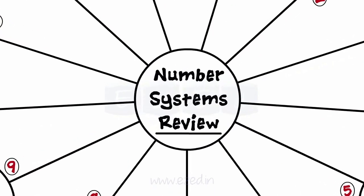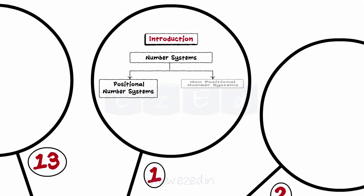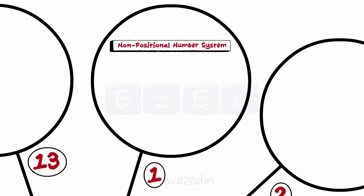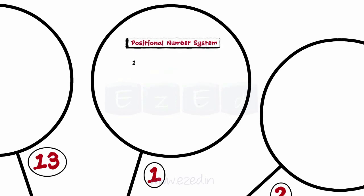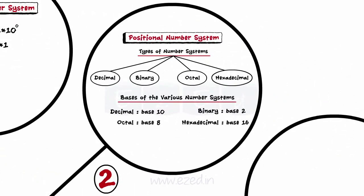Let's have a quick review of what we have studied. Number systems are of two types: positional and non-positional number systems. In a non-positional number system, each number in each position does not have to be positional itself. A positional notation numeral system is one in which each position is related to the next by a constant multiplier of that numeral system. The various types of number systems used in computers are decimal, binary, octal, and hexadecimal.